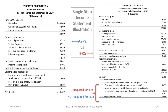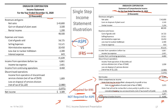Showing the two statements side by side: on the left, under ASPE, we have the income statement for the year ended December 31st, 2020, giving net income of $3,389,000. On the right, under IFRS, we have the statement of comprehensive income with the same net income of $3,389,000, but now including the OCI section with items that may be reclassified and items that will not be reclassified, resulting in total comprehensive income of $4,646,000. OCI is not required under ASPE but is required under IFRS.